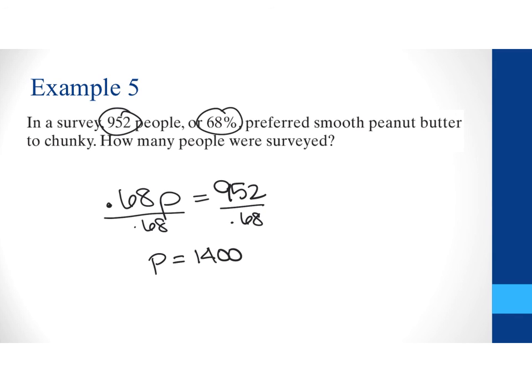Now, if you want to set this up with a proportion again, we can do our 68% as 68 over 100 equals my part in this case is the 952 and we do not know the number of people to make up our whole. So, I can go ahead and cross multiply and I'll still get that there are 1,400 people.